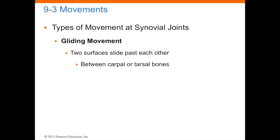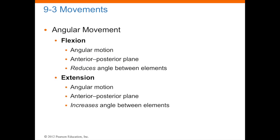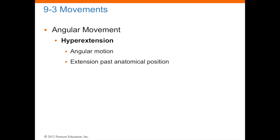Gliding movements occur when two surfaces basically glide past each other — for example, between the carpal and tarsal bones. Flexion is basically movement that reduces the degree of a joint angle. Extension is the opposite, where movement increases the angle of a joint. Hyperextension is when you go beyond the normal anatomical position — for example, when someone sticks their hand out straight but their palm or wrist actually goes beyond the elbow joint, kind of like someone taking your arm and bending it upwards towards the sky.